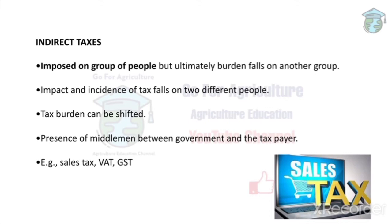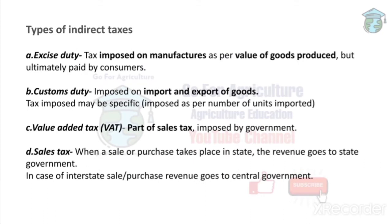Types of indirect taxes: first is excise duty. This is applied to manufacturers — they must show the value of the goods they produce. Essentially, this tax is passed on to consumers, and you can observe it on food products or other commodities.